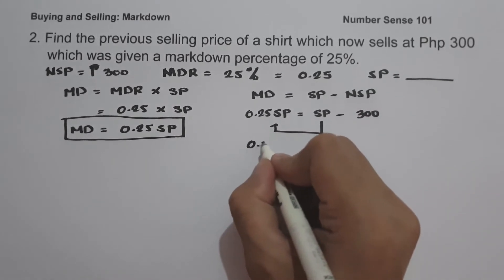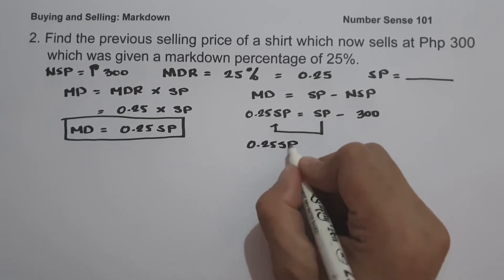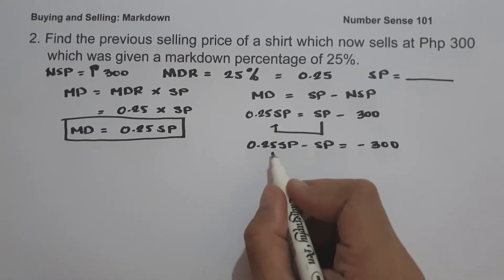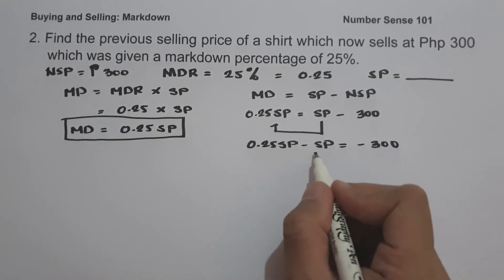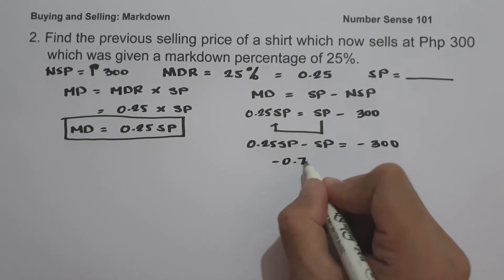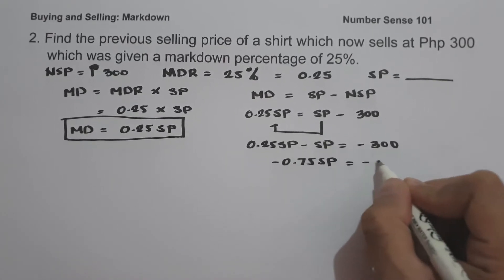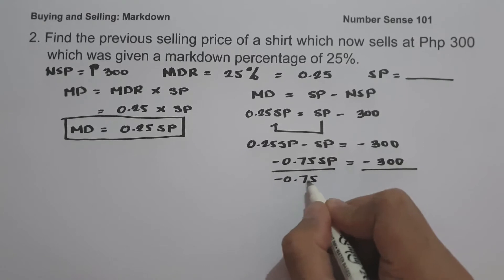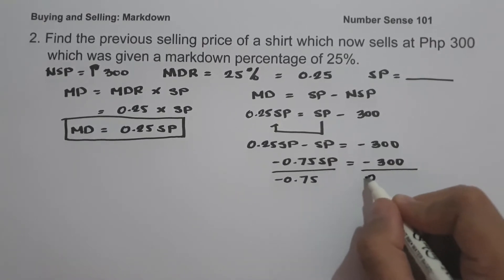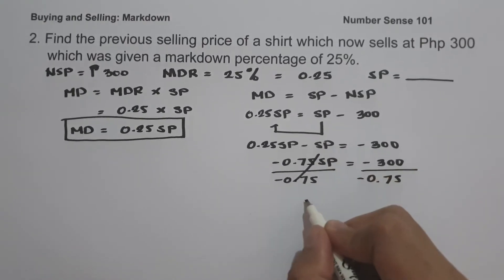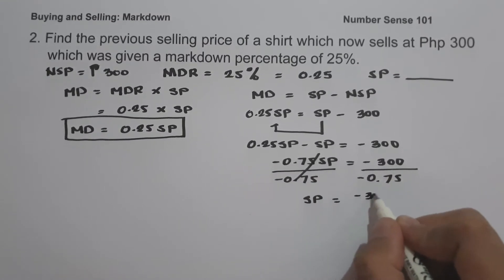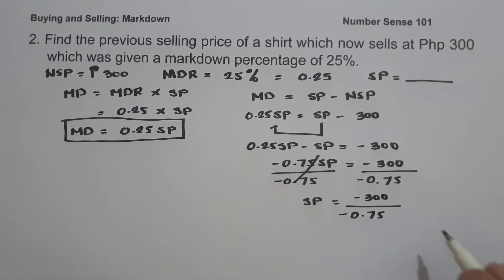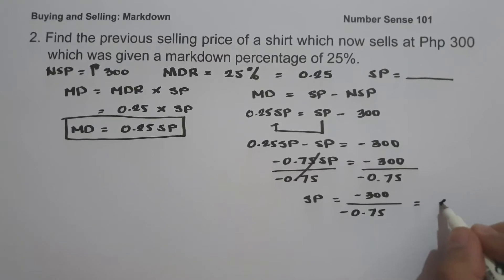Let us move the selling price to the other side of the equation: 0.25 selling price minus selling price equals negative 300. That gives us negative 0.75 times selling price equals negative 300. Dividing both sides by negative 0.75, selling price equals negative 300 divided by negative 0.75, which gives us a selling price of 400 pesos.